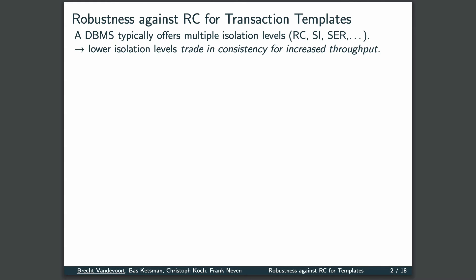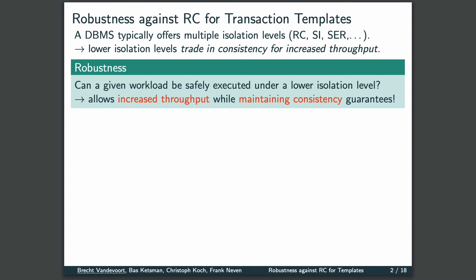A database management system usually offers multiple isolation levels to choose from, such as Read Committed, Snapshot Isolation, or Serializability. Lower isolation levels, such as Read Committed, trade in consistency guarantees for increased throughput. This brings us to the robustness problem: can a given workload be safely executed under a lower isolation level? In other words, is every possible concurrent execution of the workload serializable? This is an interesting property as it allows selecting the lower isolation level to benefit from increased throughput.